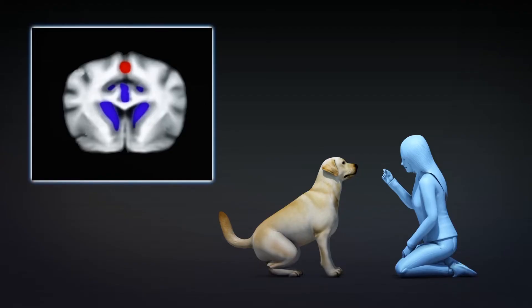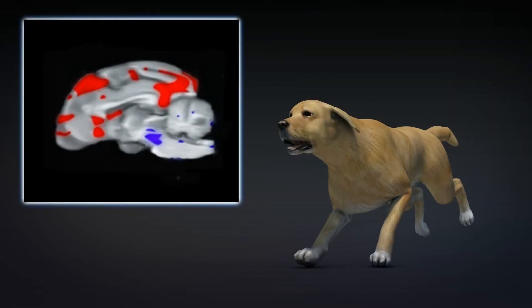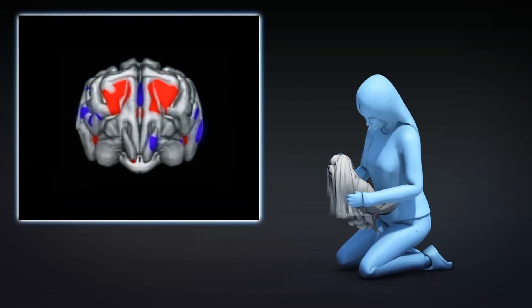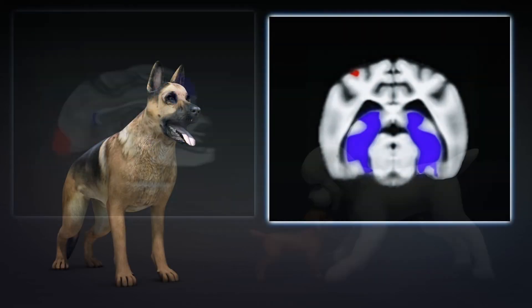They then examined areas of the dog's brains that varied most across breeds and mapped out six distinct brain networks, each linked to certain functions. Anatomical variations in the brain networks were associated with variations in behavior.